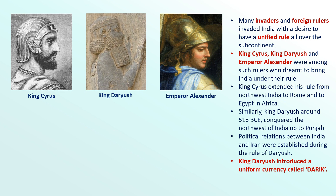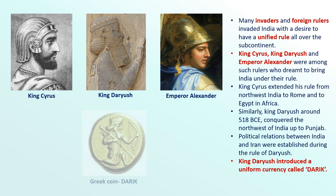Similarly, King Dariush around 518 BCE conquered the northwest of India up to Punjab. Political relations between India and Iran were established during the rule of Dariush. King Dariush also introduced a uniform currency called Darik.